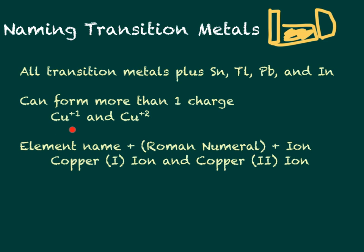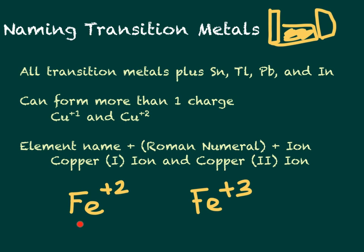For example, copper can have a plus one or a plus two charge. To indicate which we mean, we list the element name followed by the Roman numeral in parentheses and the word ion. So Cu⁺ is copper(I) ion and Cu²⁺ is copper(II) ion. Likewise, Fe²⁺ is iron(II) ion and Fe³⁺ is iron(III) ion. Roman numerals typically only go up to four — I, II, III, and IV — for most of these ions.